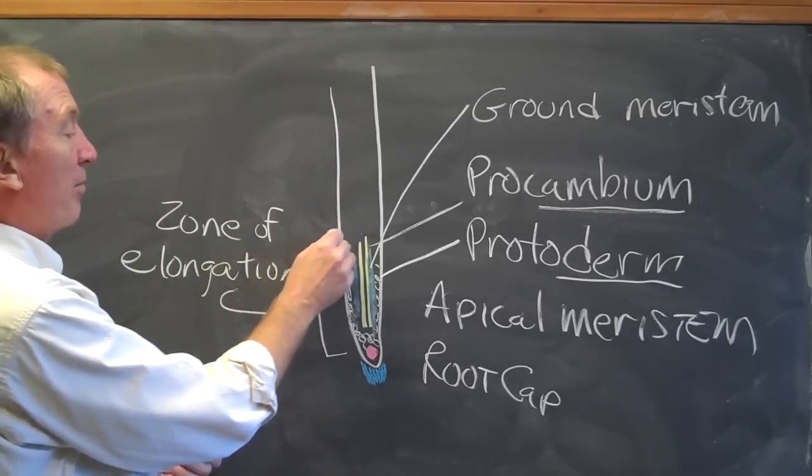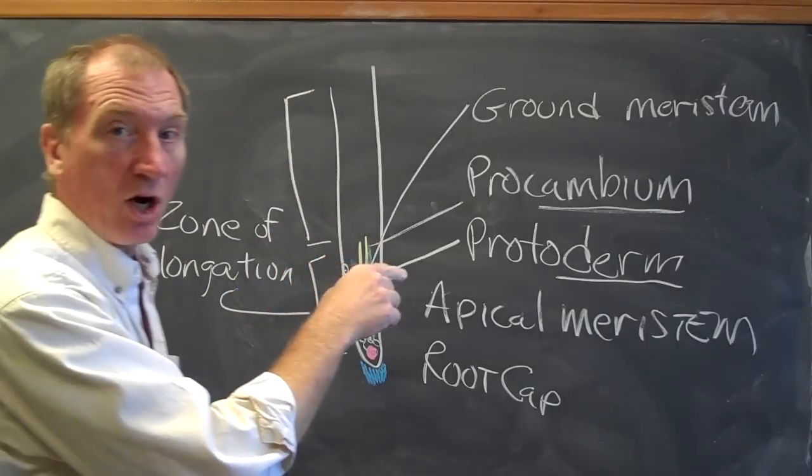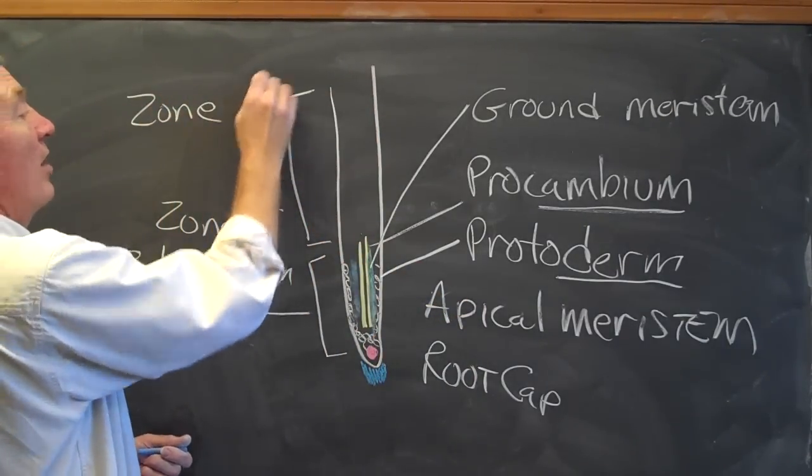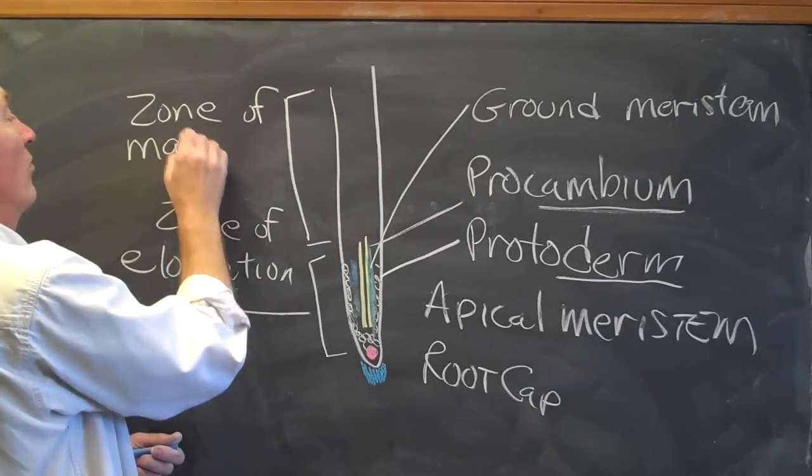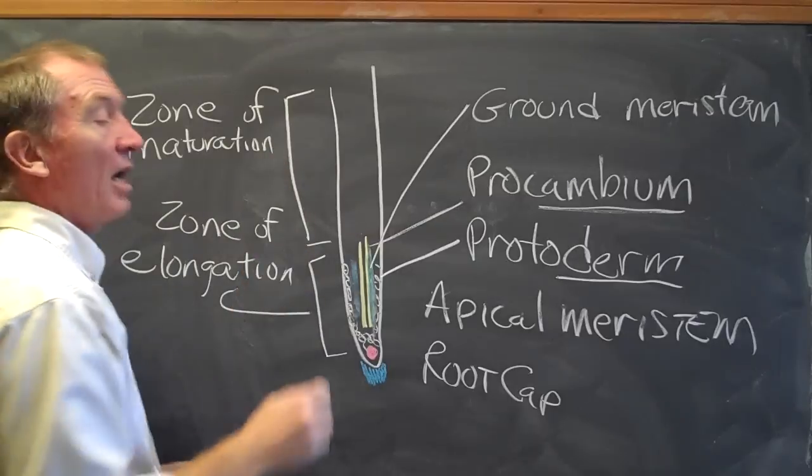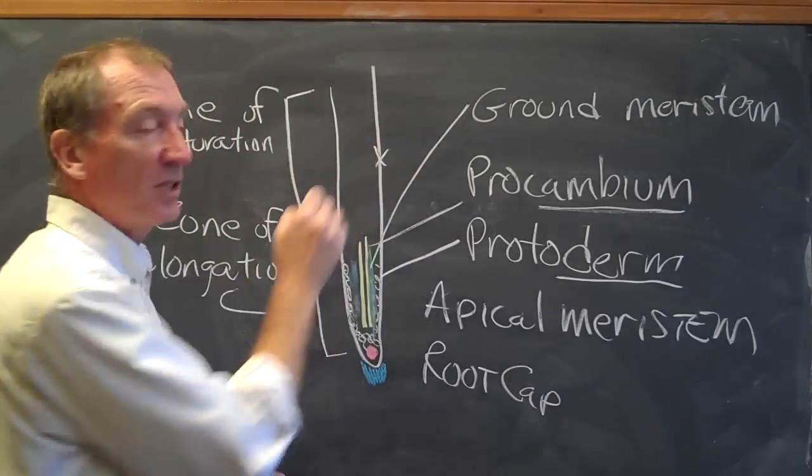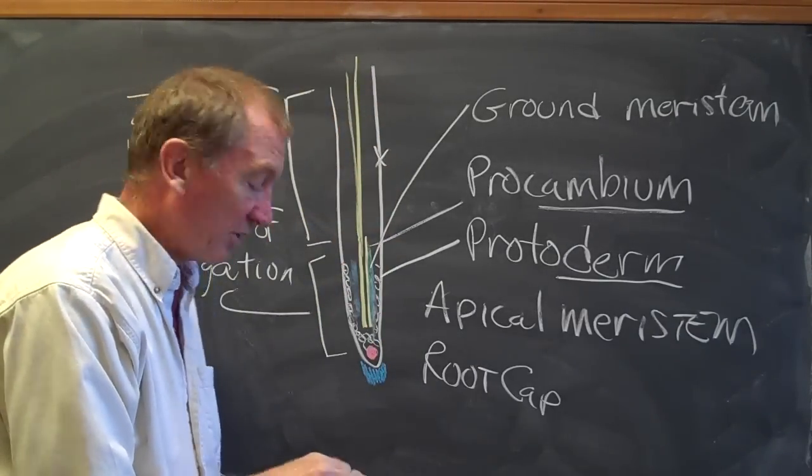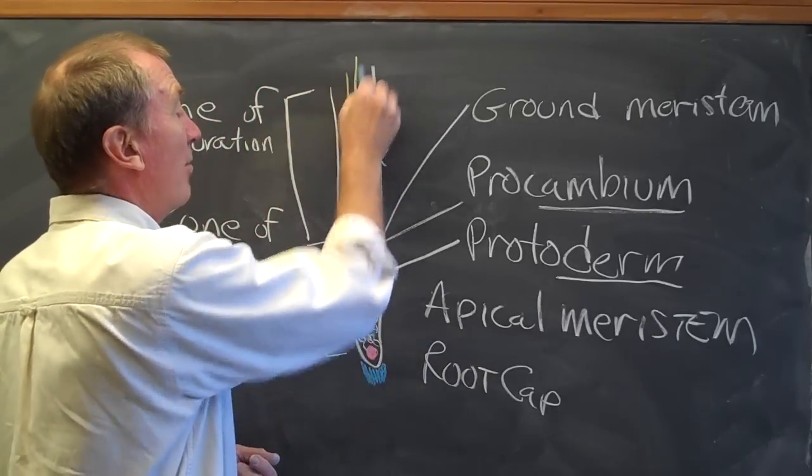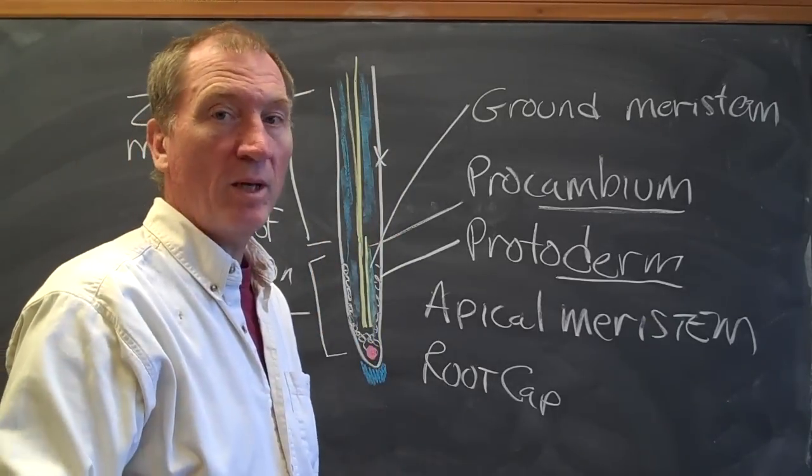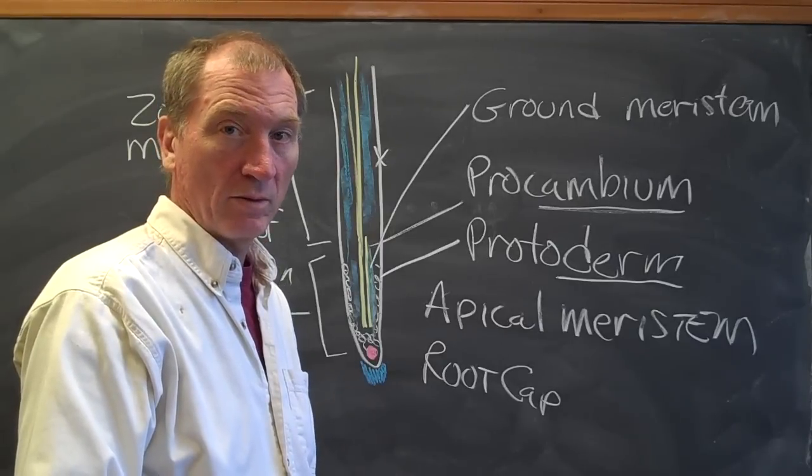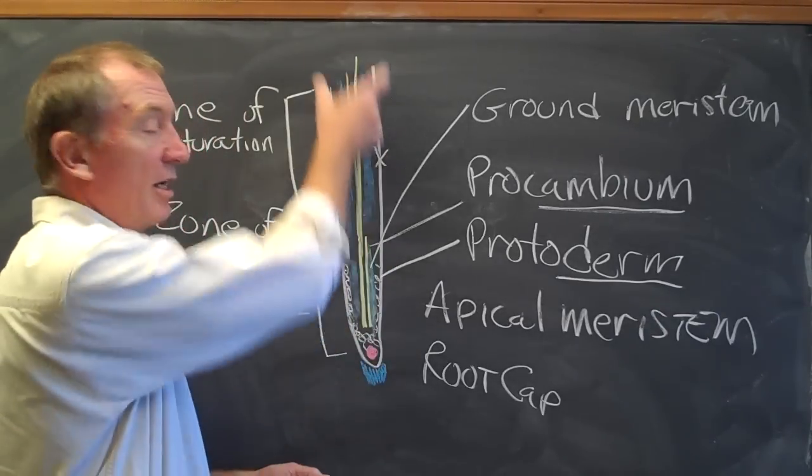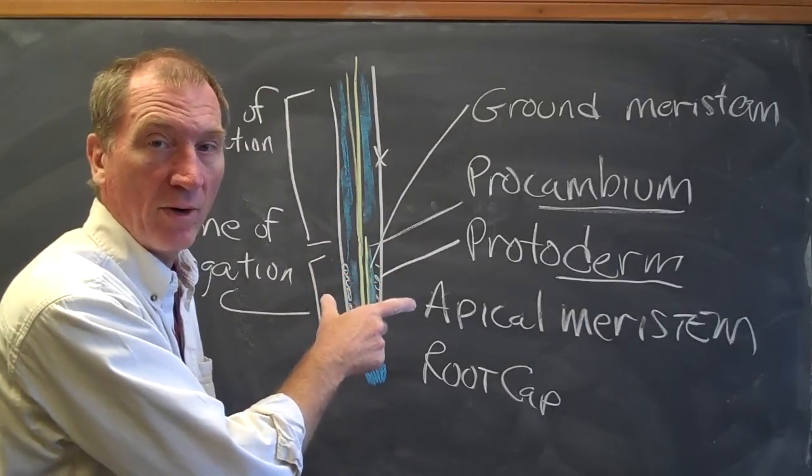So later in the plant's life, these cells are going to mature and it happens in this area called the zone of maturation. And here's then where you will find the dermal cells on the outside, xylem, phloem, and cambium in the vascular tissue. And mature cortex tissues with parenchyma, colenchyma, and sclerenchyma. So those are the types of tissues and how they're organized in the juvenile part of the root and in the mature part of the root. You'll see this in the diagrams in the lesson.